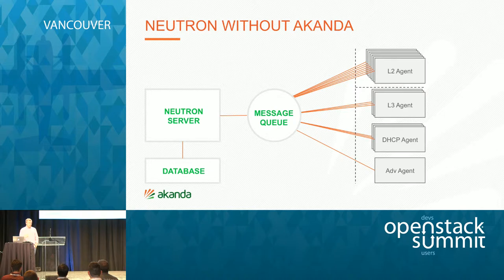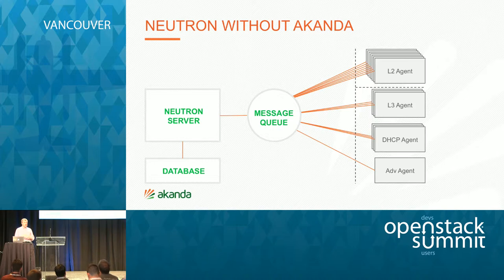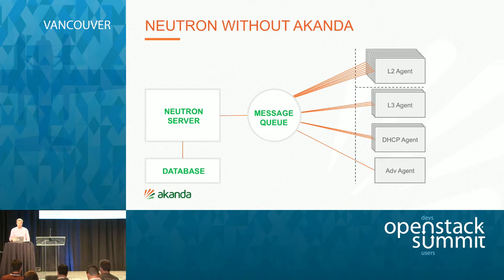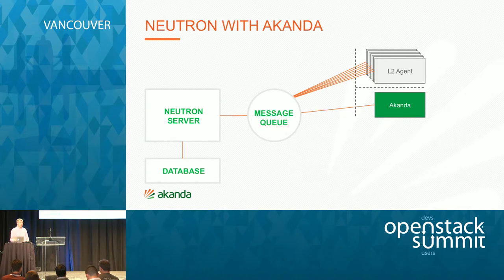If we consider what Neutron looks like without Aconda, this is the traditional diagram: multiple layer 2 agents, a layer 3 agent, DHCP agents, and advanced services agents. In those deployments, the L3 agent and DHCP agents end up being choke points and single points of failure. Even with multiple copies running, if you're not in DVR mode, you create a congestion choke point. With Aconda, we can simplify this significantly — replacing the layer 3 agent, DHCP agent, and advanced services agent with a single Aconda service that manages and orchestrates network services for you.